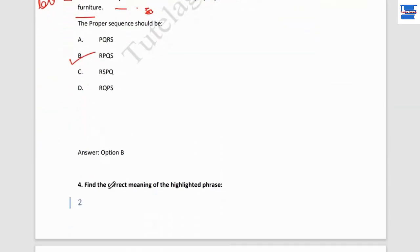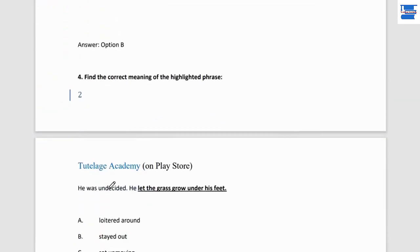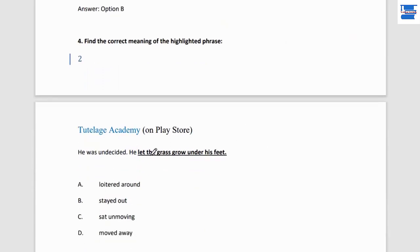Question number 4: find the correct meaning of the highlighted phrase. 'He was undecided, to let the grass grow under his feet.' The person was undecided. This phrase means to just wait, do nothing, be inactive — feeling everything is boring, doing nothing, waiting for something to happen. That is what 'letting the grass grow under his feet' means.